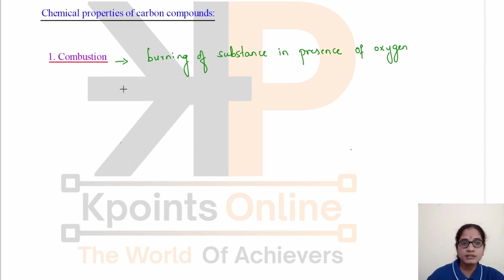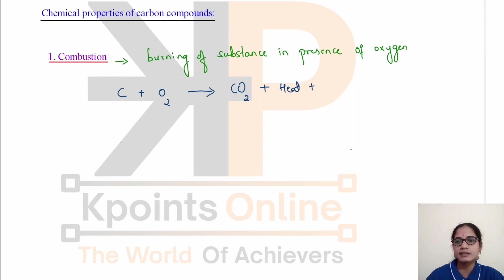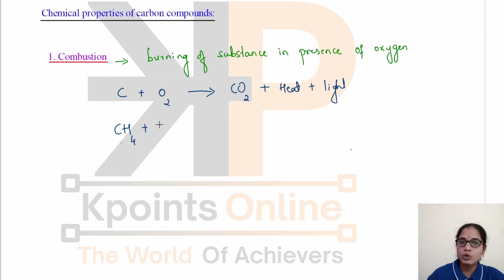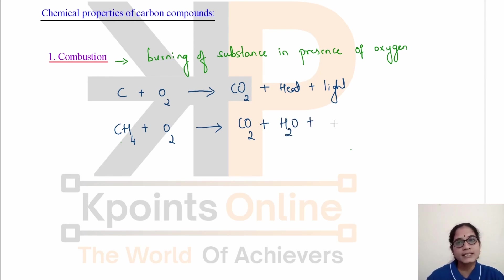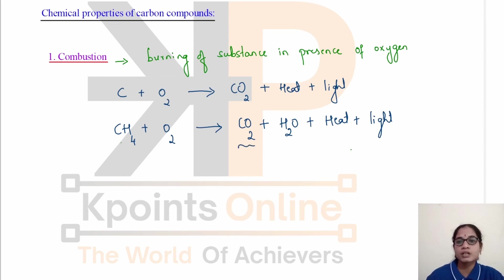Carbon and its compounds burn in the presence of oxygen to release a large amount of heat and light. When carbon is burned, it forms carbon dioxide along with the release of heat and light — this is an oxidation reaction. Hydrocarbons also undergo combustion to release carbon dioxide, water, heat and light, as hydrogen is also oxidized to water.